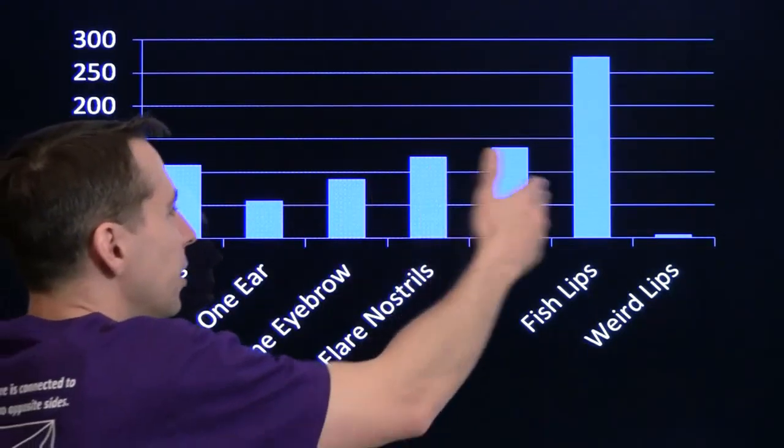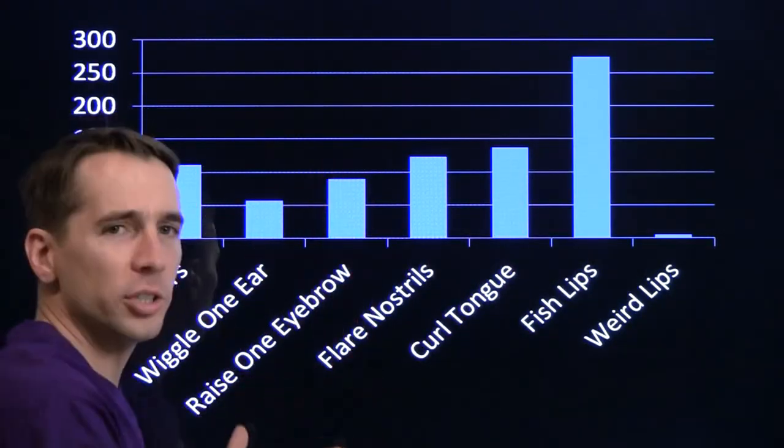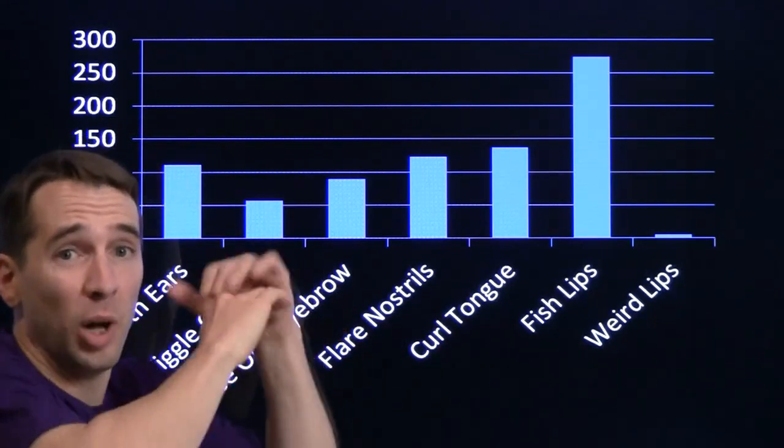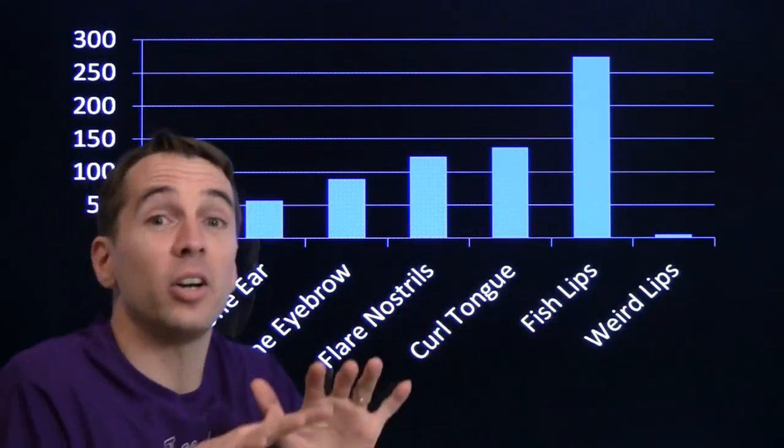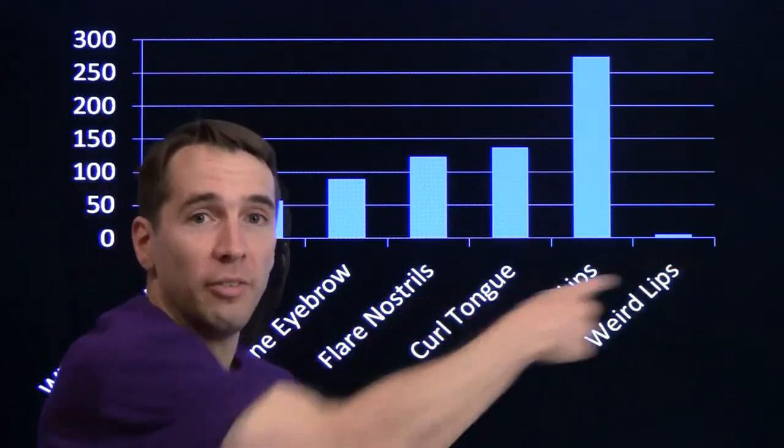Whereas over here, some students, some people are going to be in one or two of these. Some of them are going to have no skills at all, can't do any of them. And then they're going to be total freaks that can do all seven of them.